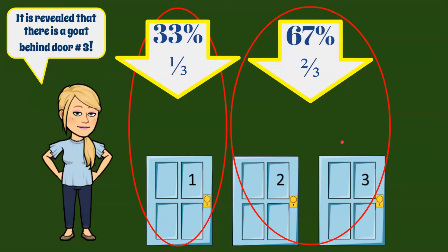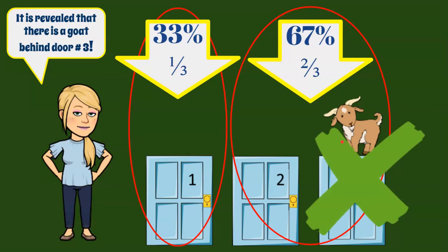So if it is revealed to you that there is a goat behind door number three, you know now that your choice was door number one, and it's not behind door number three. So if you're asked if you want to switch your choice, you have a 67% chance that it's behind door number two, because this probability model did not change.